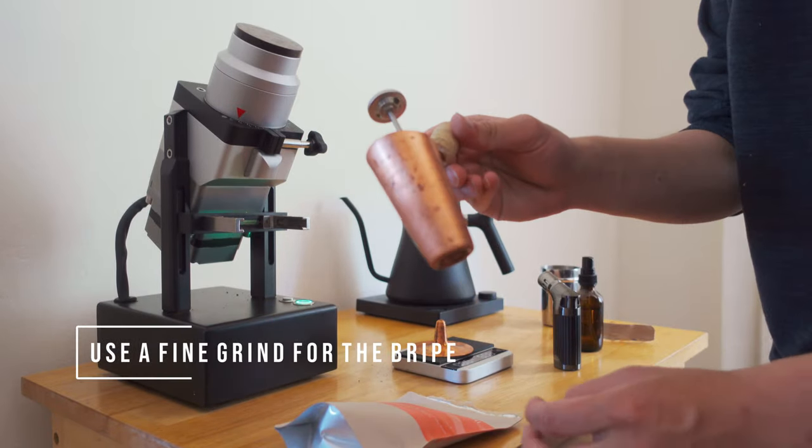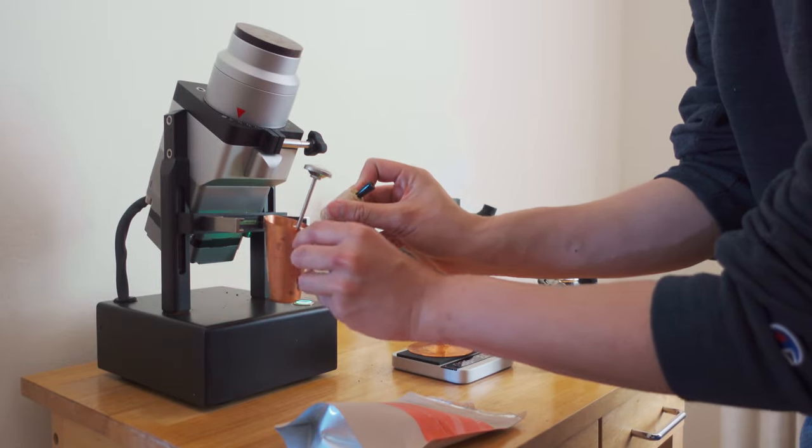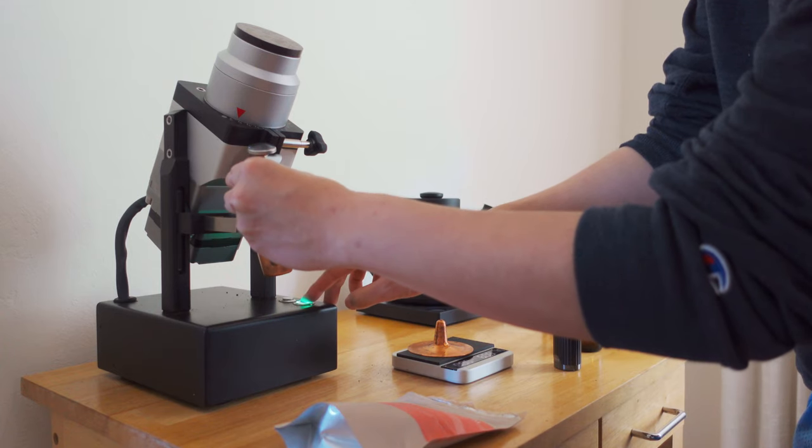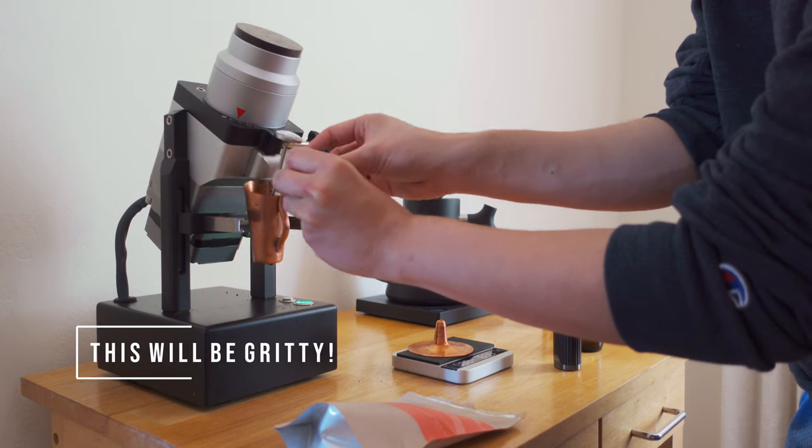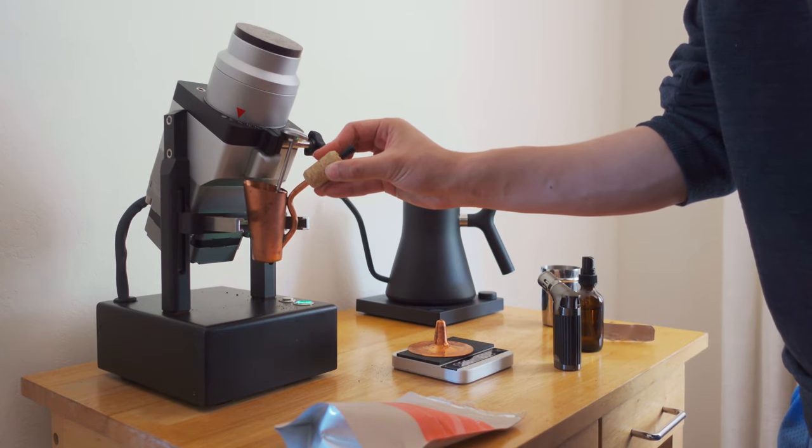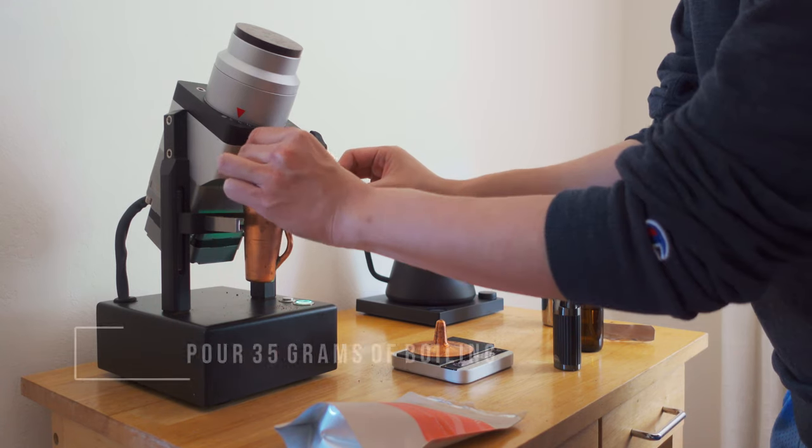Now I can begin grinding into the bripe. I'm using a fairly coarse espresso grind. Still really fine for the bripe. Keep in mind, this will be really gritty. However, this will be perfect for extracting the most out of those lighter roasts and a great way to finish off a bag of coffee.